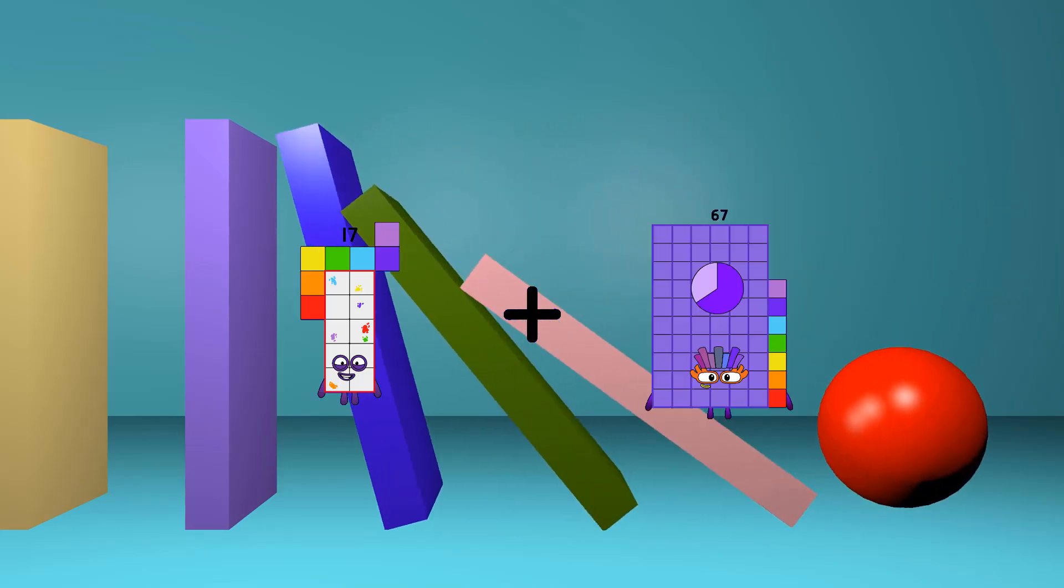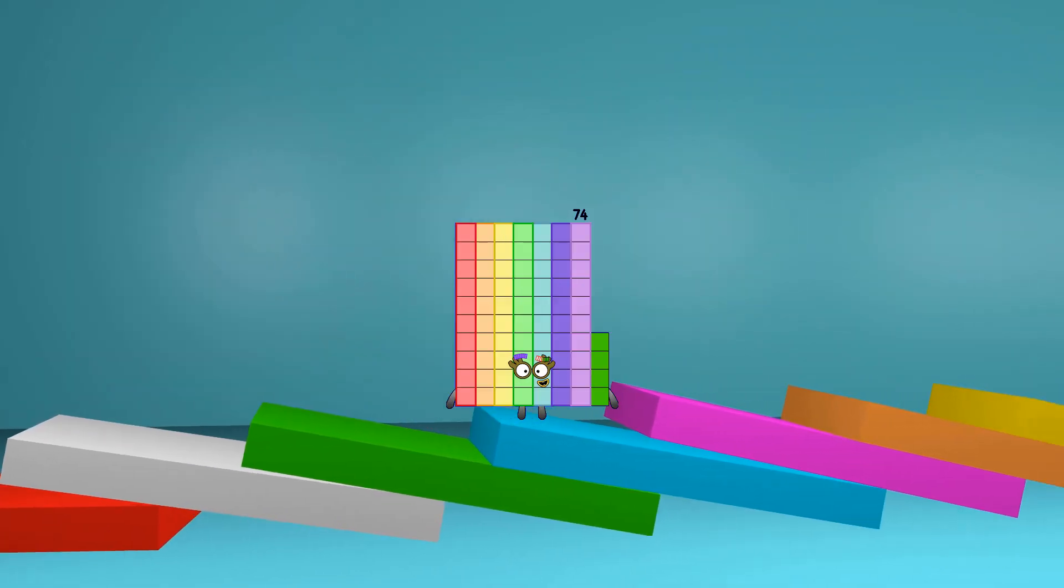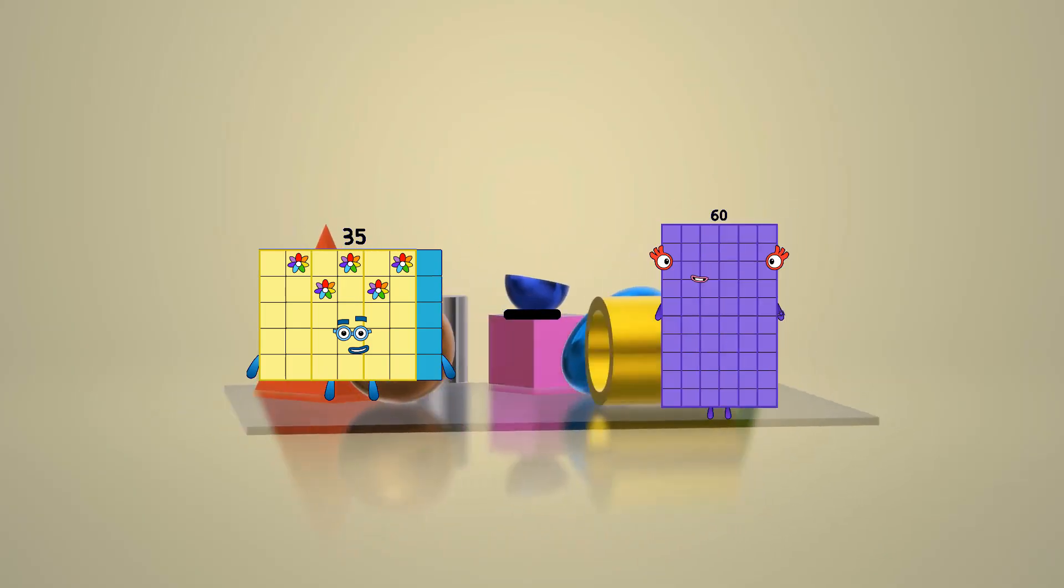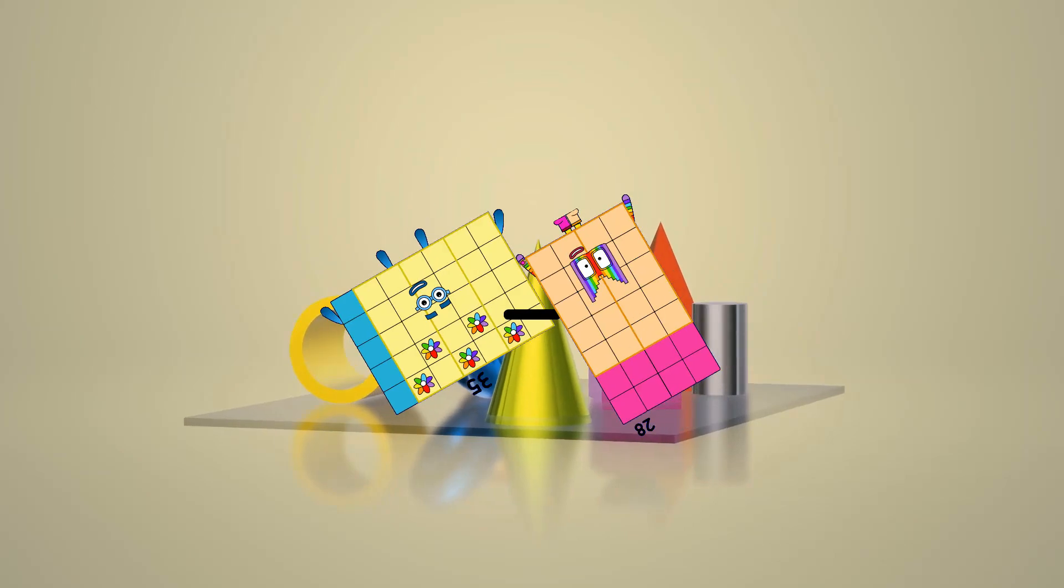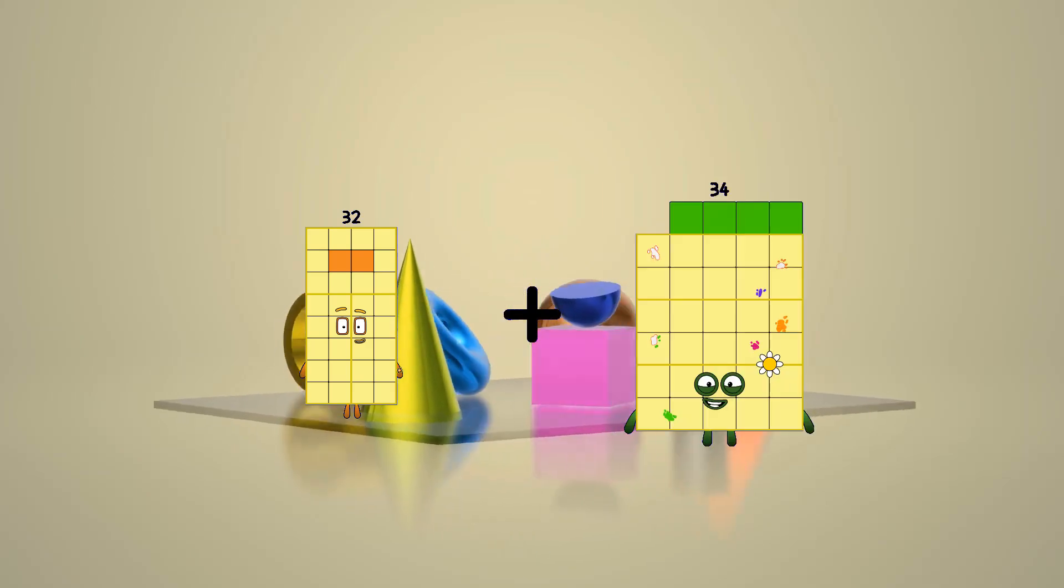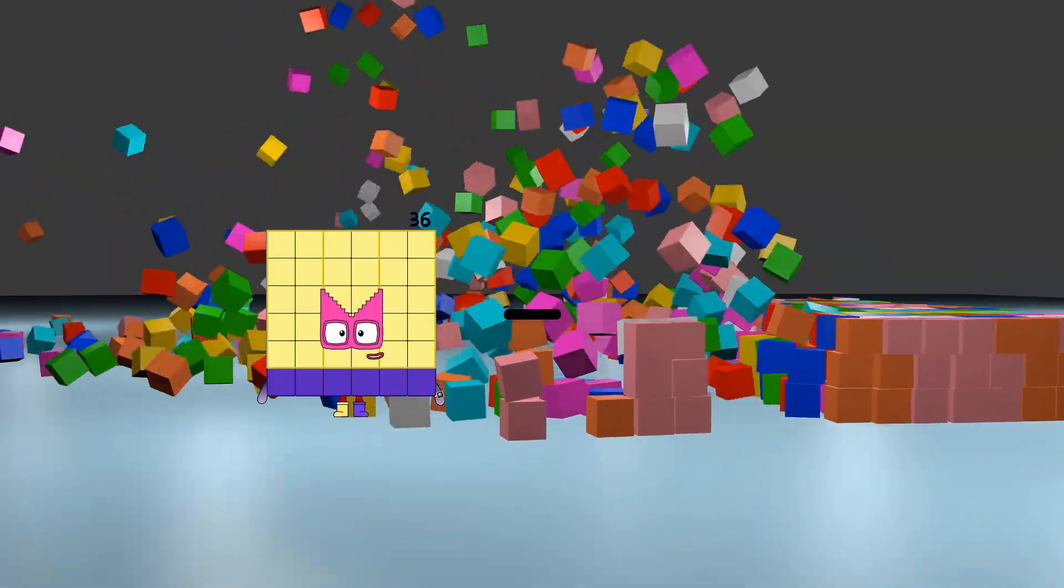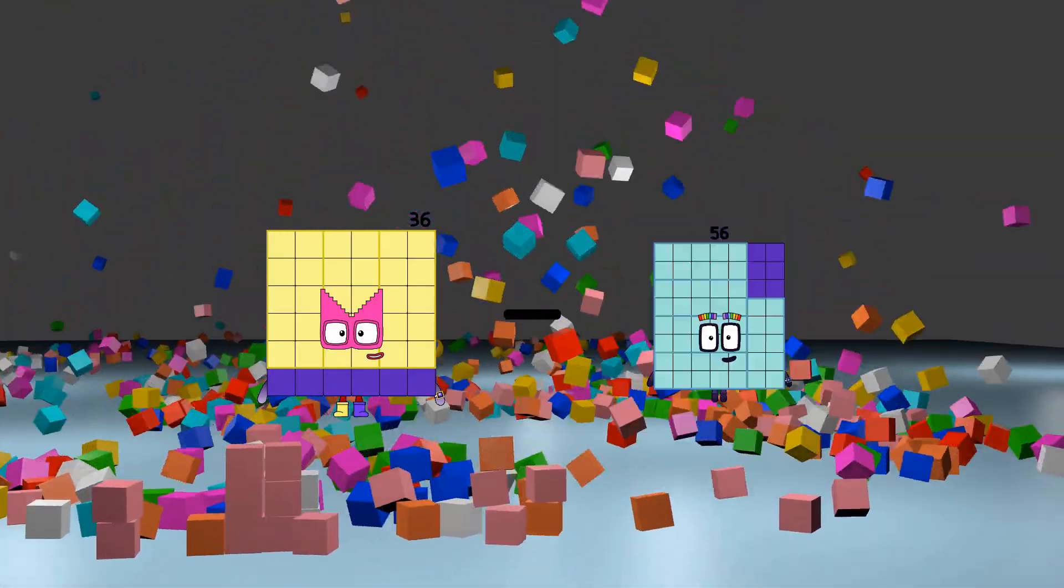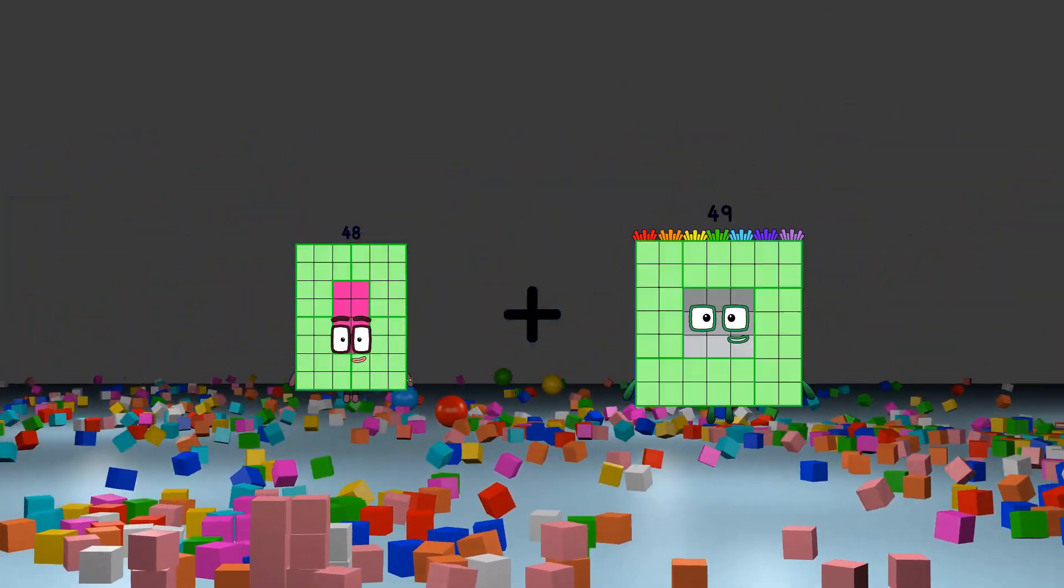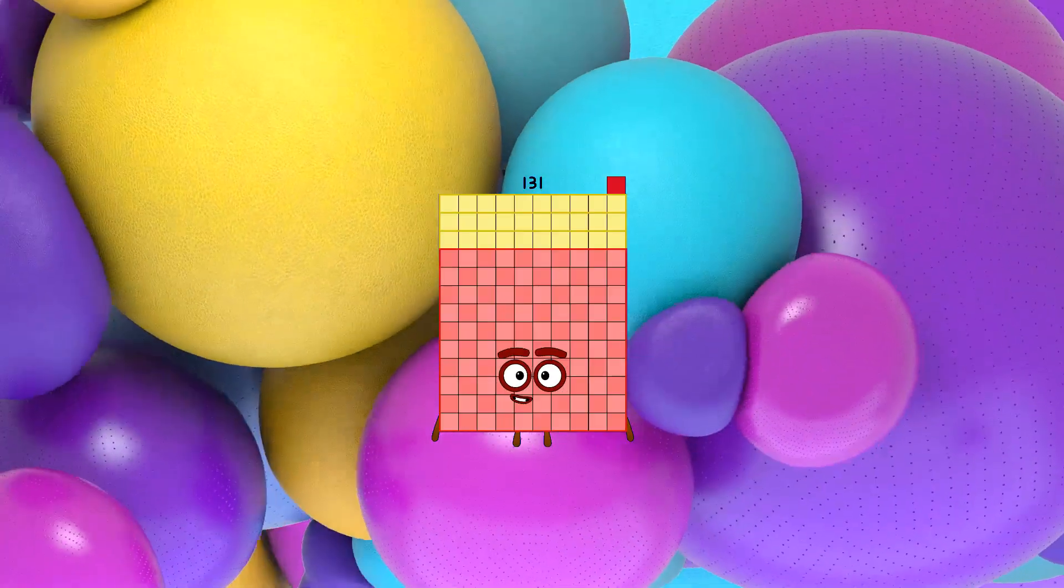17 plus 57 equals 74, 35 minus 28 equals 7, 32 plus 34 equals 66, 36 minus 34 equals 2, 48 plus 83 equals 131.